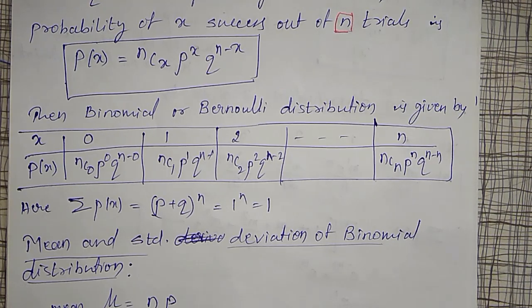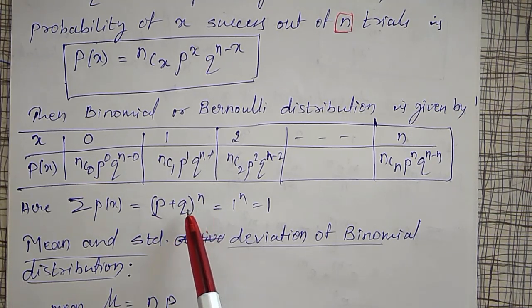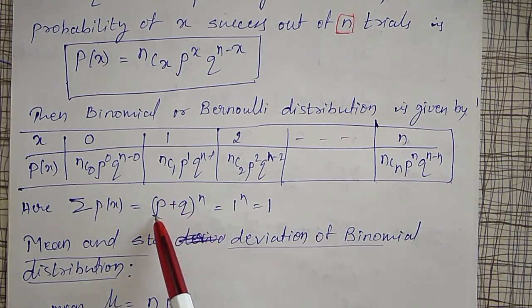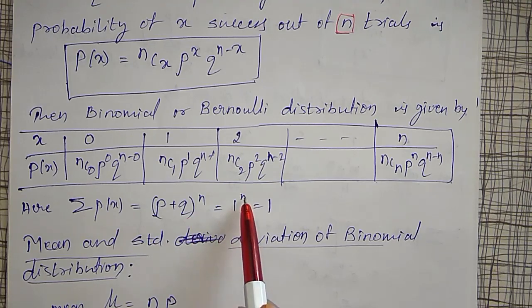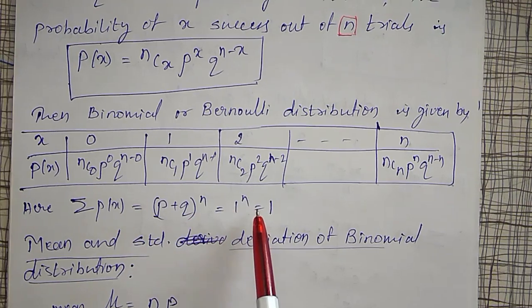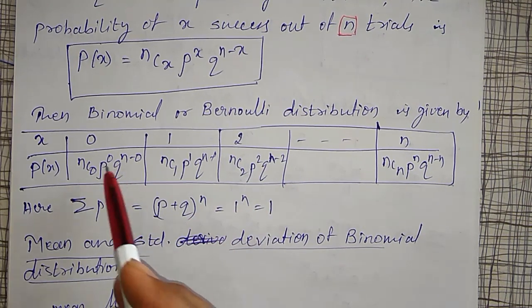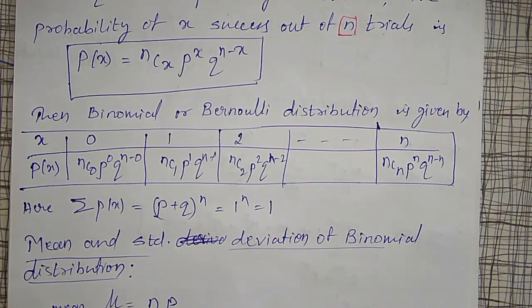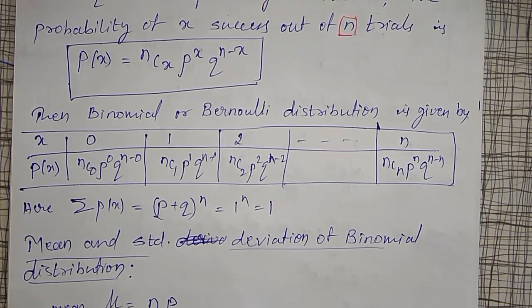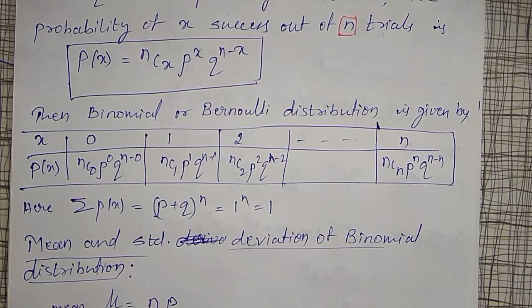The sum equals (p + q)^n. Since the probability of success plus the probability of failure equals 1, we have p + q = 1, so 1^n = 1. Therefore P(x) = nCx · p^x · q^(n−x) represents a valid probability function for the binomial distribution.